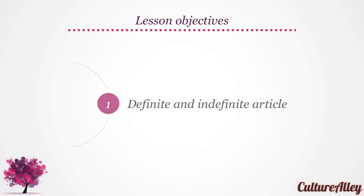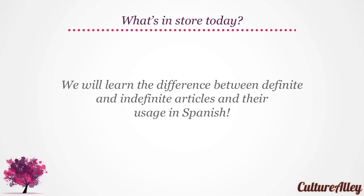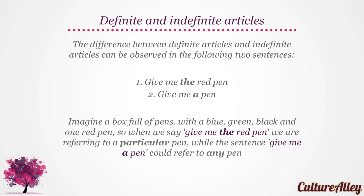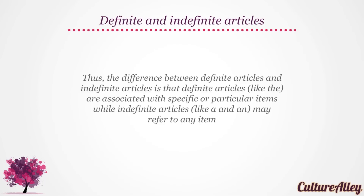Today we learn about definite and indefinite articles. We will learn the difference between definite and indefinite articles and their usage in Spanish. The difference can be observed in the following two sentences: give me the red pen, and give me a pen. Imagine a box full of pens — blue, green, black, and one red pen. Give me the red pen refers to a particular pen, while give me a pen could refer to any pen. Thus, definite articles like the are associated with specific or particular items, while indefinite articles like a and an may refer to any item.